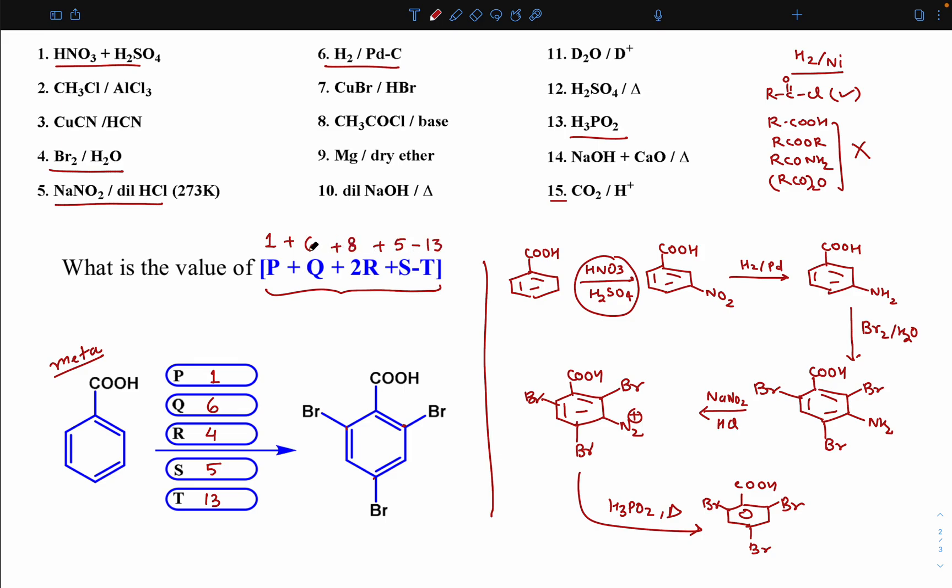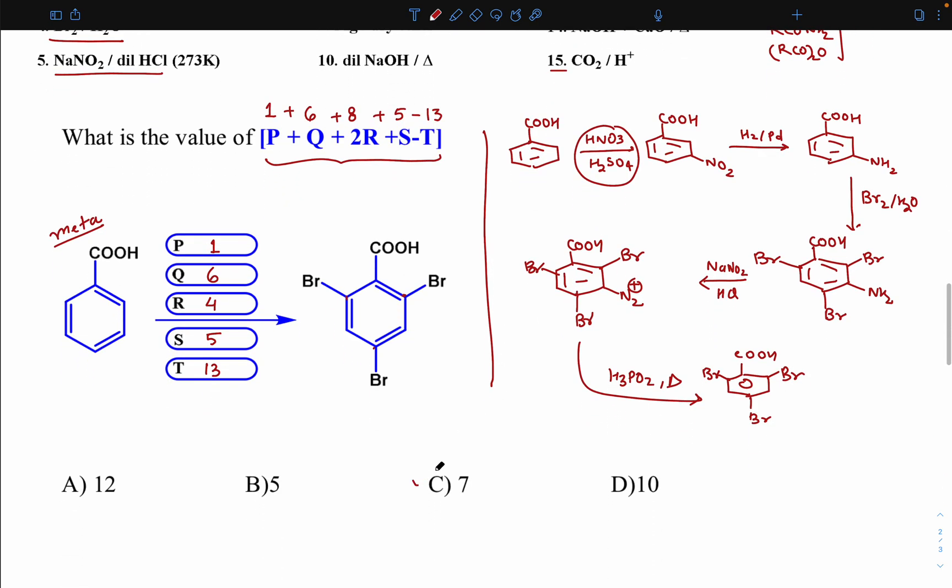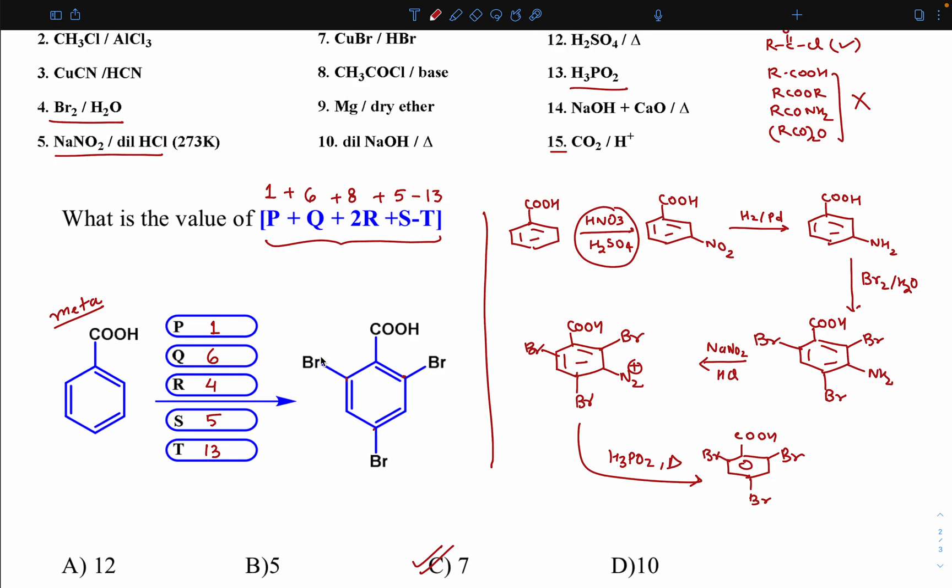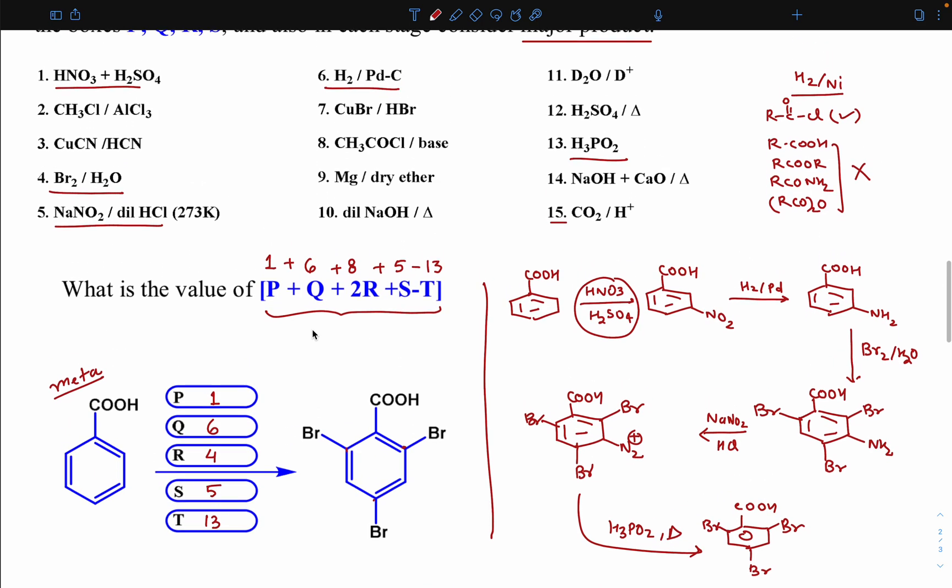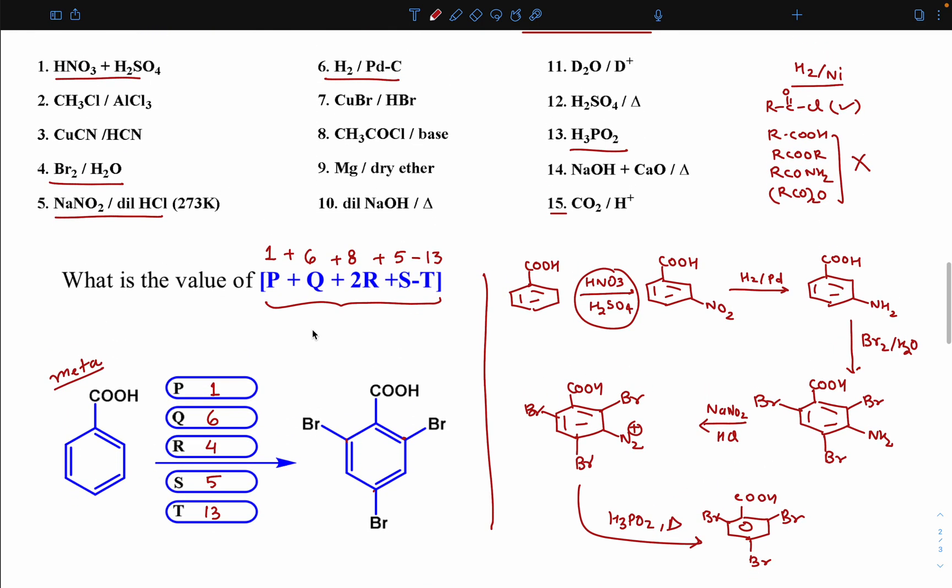This is 8, 6, 14 plus 5 is 19, 19 minus 13 means... 6 plus 8 is 14 plus 5 is 19... wait, this is 20, 20 minus 13 means 7. So the final answer should be C if I show this question in multiple choice, otherwise in numerical integer you have to fill answer 07. We have many such questions, Sudoku of organic reagents. We'll discuss the next Sudoku in the next video, thank you everyone.